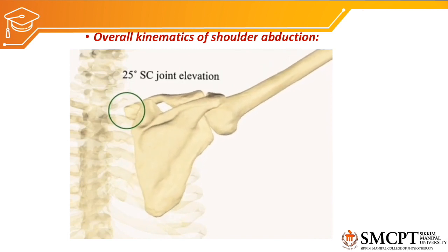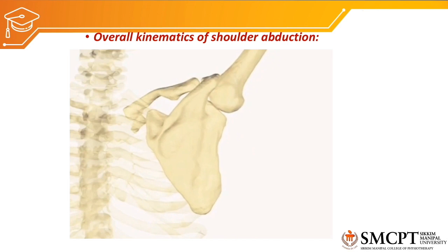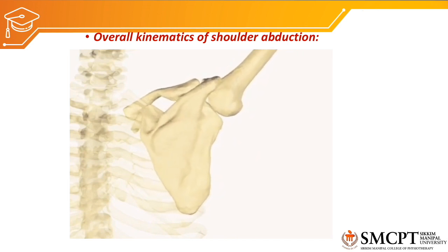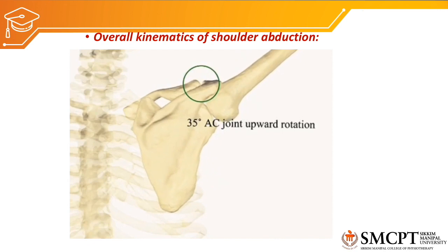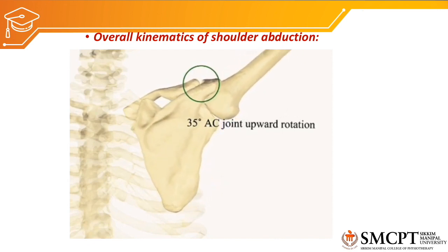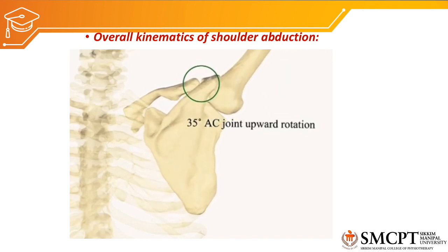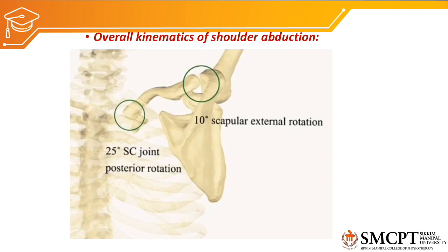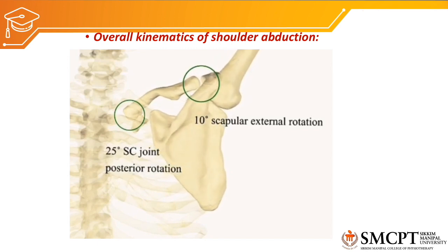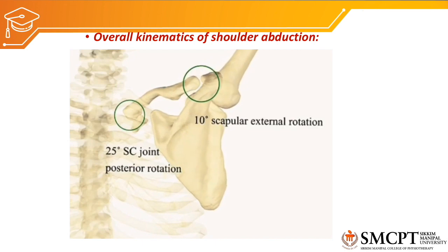If the scapula also moves then there will be even more increase in the range of motion. The scapula rotates upward to contribute more movement for abduction — upward rotation of the scapula is about 35 degrees. This 35 degrees of upward rotation along with clavicular elevation of 25 degrees adds up to the overall abduction. In addition, external rotation of the scapula of about 10 degrees and posterior rotation of the clavicle combine at the sternoclavicular joint and acromioclavicular joint to create a protraction movement, which adds further range for abduction of the shoulder complex.